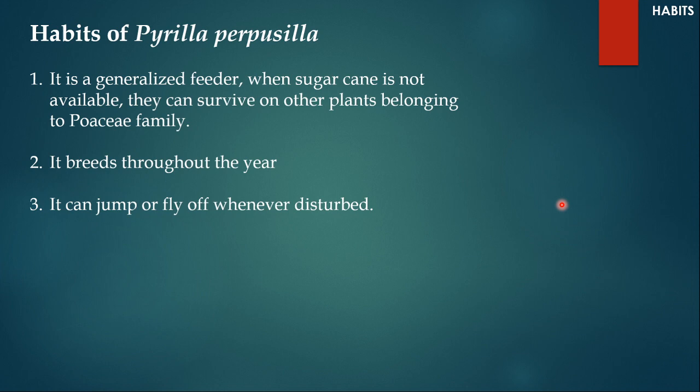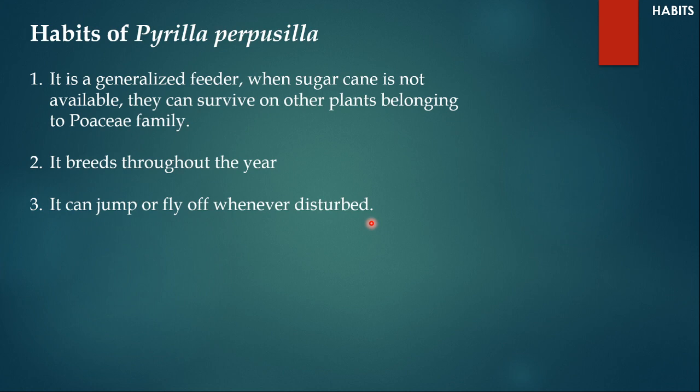Habits of Pyrilla purpusilla: it is a generalized feeder. When sugarcane is not available, they can survive on any other plant belonging to the Poaceae family, so even grass can become their host. It breeds throughout the year, which makes it very difficult to control because you cannot simply shift your cultivation time to get rid of it — it is always present on sugarcane, rice, wheat, or any other grass-family plant. It can jump off or fly off very fast when disturbed.